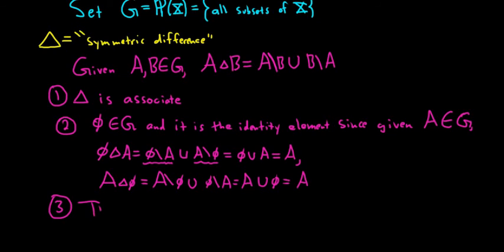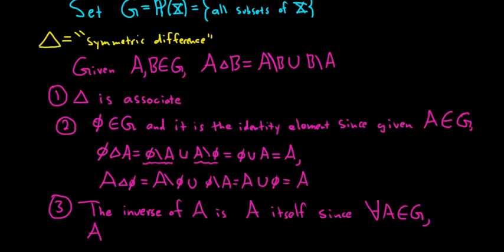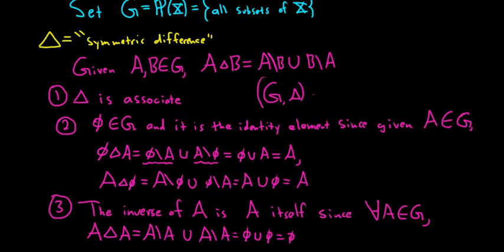Third, the inverse of any element A is A itself. So kind of an interesting group, every element is its own inverse. And this is since for all A in G, which is the power set of X, if we look at A triangle A, that's everything in A set minus A union A set minus A. So that's going to be the empty set union with the empty set which is the empty set.